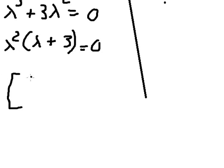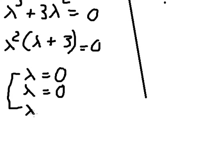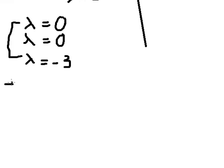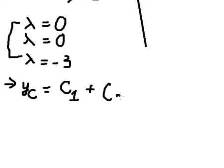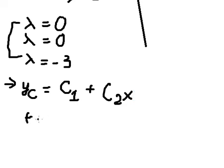From the factorization we get lambda equals zero, lambda equals zero, and lambda equals negative three. So yc is c1 times e to the power of zero times x, which equals c1. Because we have a repeated root of zero, we also have c2 times x times e to the power of zero, and then c3 times e to the power of negative three x.